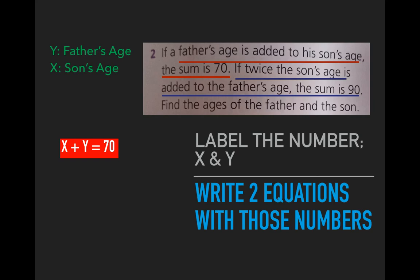So the son's age we're calling x. That's twice his age, 2x, added to y, which is the father's age. So 2x + y = 90. That gives you my second equation.